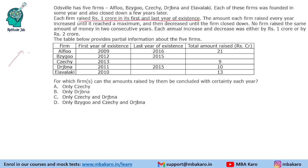So the amount raised increased and then decreased. No firm raised the same amount of money in 2 consecutive years. Each annual increase and decrease was either by Rs 1 crore or by Rs 2 crore. We are given that there are 5 firms. Their first year of existence, last year of existence, and total amount raised is given to us. Using that, we need to figure out how much fund they raised in each of the years.